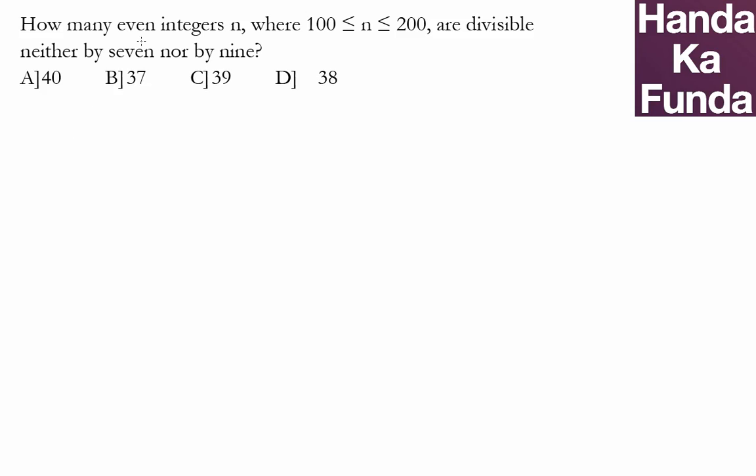Hello, in this particular question we have to find out how many even integers are there between 100 to 200, both of them inclusive, which are divisible neither by 7 nor by 9. So first of all we will find out how many even integers are there.